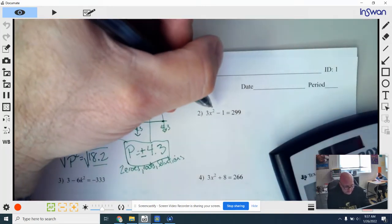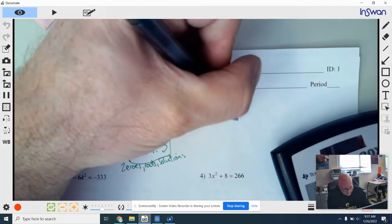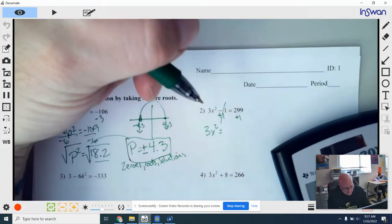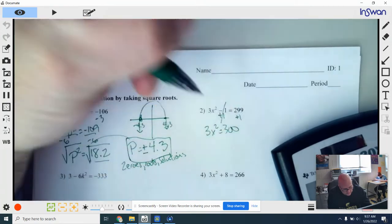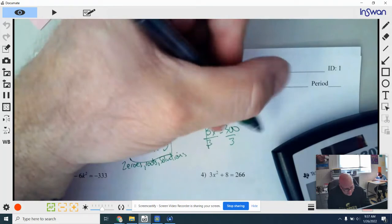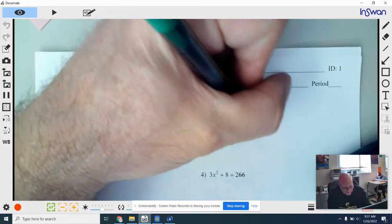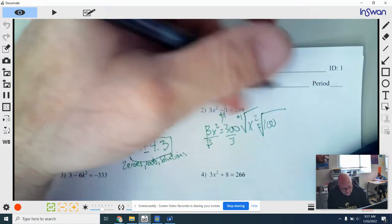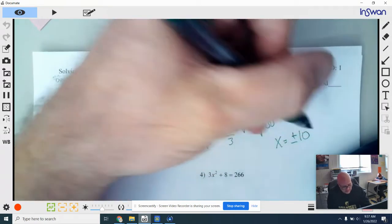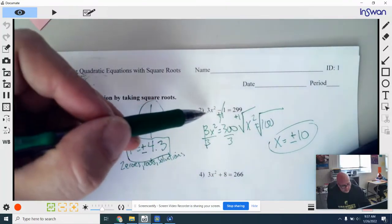Number two. So to do this one, again, I want to get this x squared alone. So first thing I would do is add 1 to both sides. So that cancels. I get 3x squared equals 300. So I would divide everything by 3. I get x squared equals 100. This is an easy one, right? Perfect squares. So take the square root of the left side and the right side, and we get x equals - don't forget, it's two answers - plus and negative 10. So plus or minus 10. So again, our two solutions for this one would be plus or minus 10.